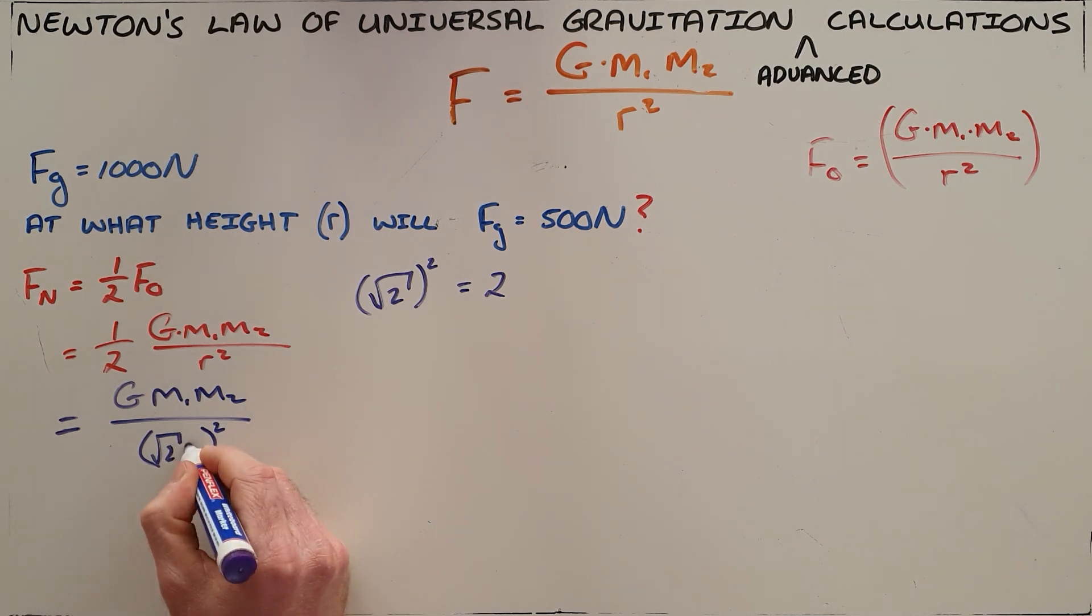Now what this tells us is that the term inside the bracket is always the distance between their centers, so the new distance is going to be √2 times the original distance.